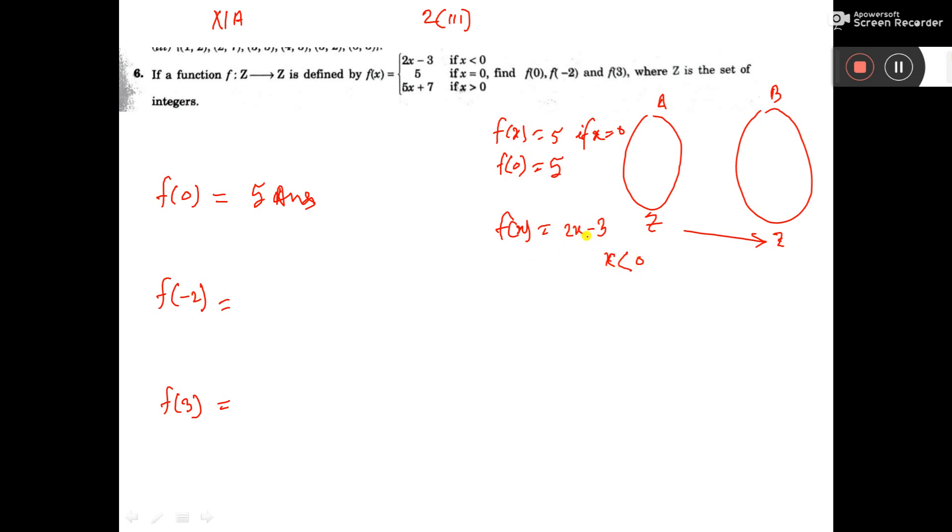So here we have to put -2. So f(-2) is equal to 2 times -2 minus 3, that is equal to -4 minus 3, that is -7. So -7 is the answer.